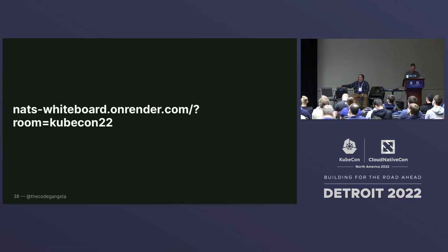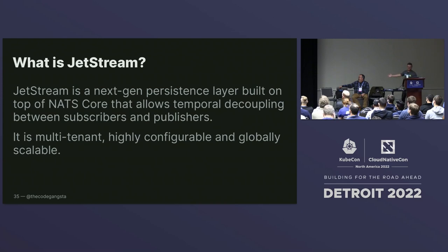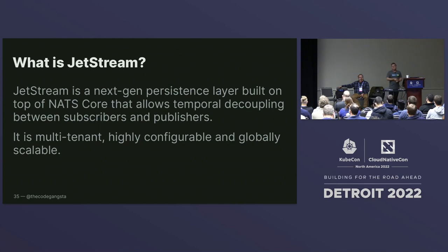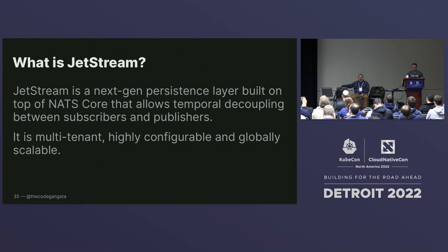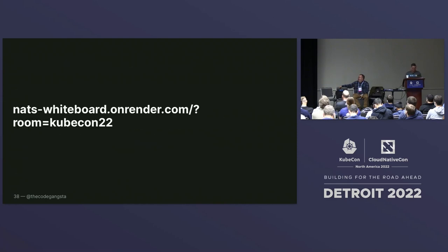Let's talk a little bit about JetStream. NATS JetStream is a next-gen persistence layer built on top of NATS that allows you to have this temporal decoupling between publishers and subscribers — basically meaning if I'm publishing a message, that subscriber doesn't need to be online in order to eventually get it. We solve that by persisting the message either in memory or on disk. Many of you who have used solutions like Kafka know all the fun challenges that come with doing this at scale. One of the cool things about NATS is that by default it is globally scalable, so we get to piggyback off a lot of the attributes that core NATS brings to deliver this type of multi-tenant persistence.